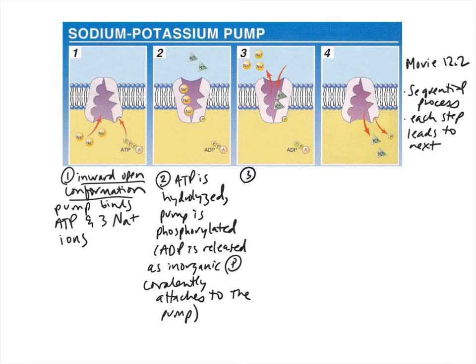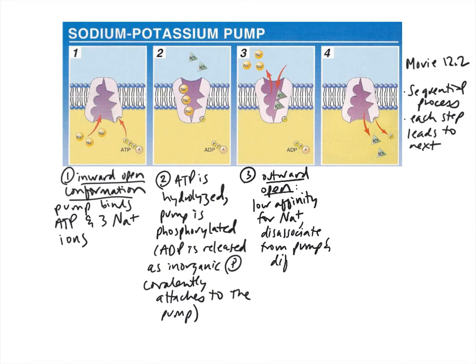That brings us to the third step. Third step is outward open. In this conformation, the pump has a low affinity for sodium ions. Remember, as the protein changes shape, then those binding sites may change their charge or shape, and basically at this point then the sodium ions will diffuse away and disassociate from the pump. Then two potassium ions, which will diffuse from outside the cell, can move into the binding sites of the pump.